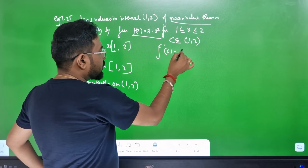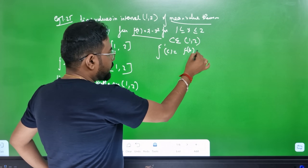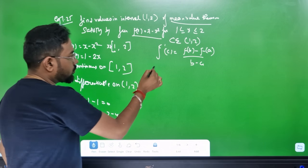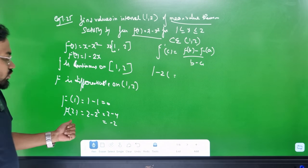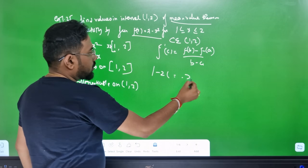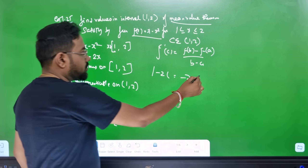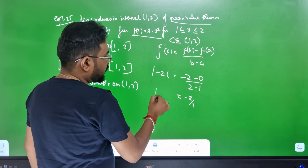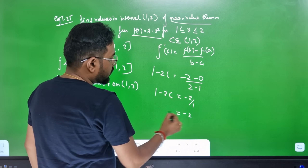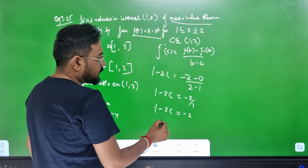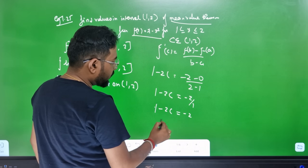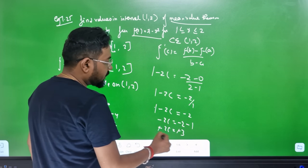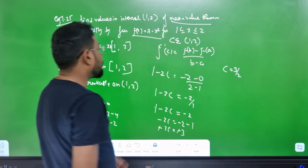So f'(c) equals f(b) minus f(a) divided by b minus a. f'(c) is 1 minus 2c. Solving: 1 minus 2c equals minus 2 minus 1, so minus 2c equals minus 3, and c equals 3/2. The point c = 3/2 is in the interval (1,2).